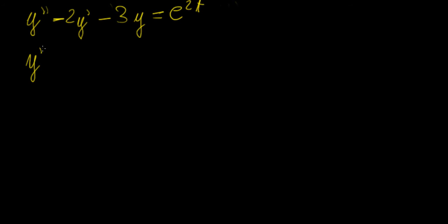So the first step is we're going to take the homogeneous part of this equation, and we're going to find the characteristic equation, so that's r squared minus 2r minus 3 equals 0.